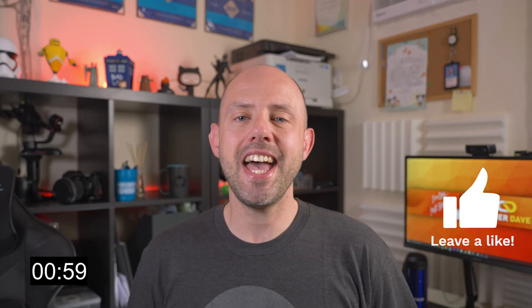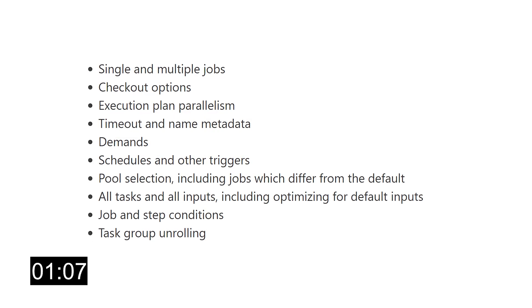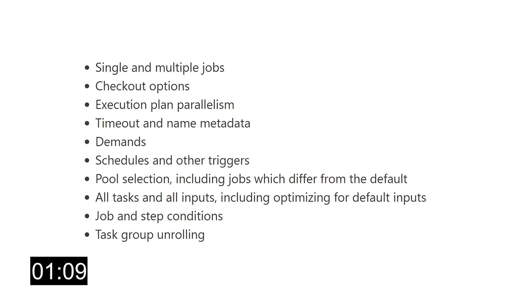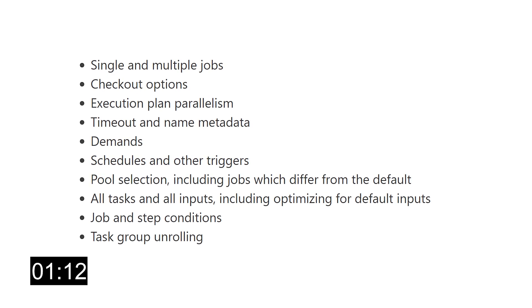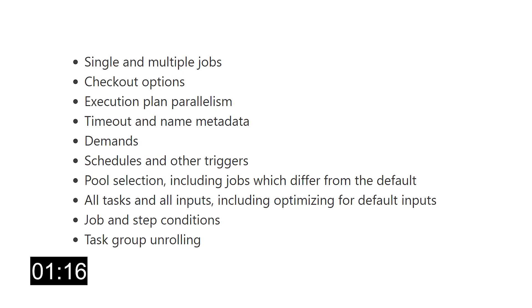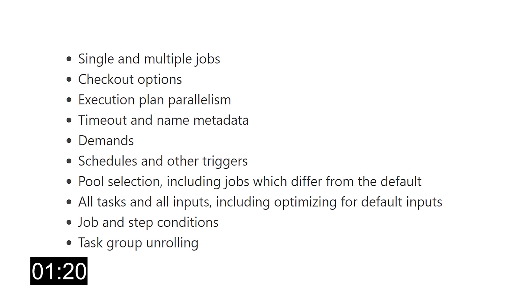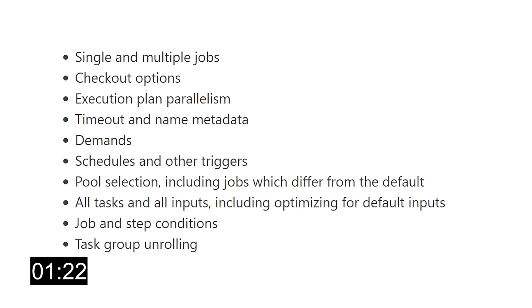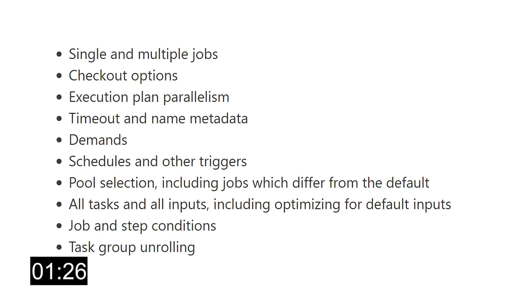In addition to being more correct, this new version covers more classic pipeline features. The new system handles single and multiple jobs, checkout options, execution plan parallelism, timeout and run metadata, demands, schedules and other triggers, pool selection including jobs which differ from the default, all tasks and all inputs including optimizing for default inputs, and job and step conditions and task group unrolling.